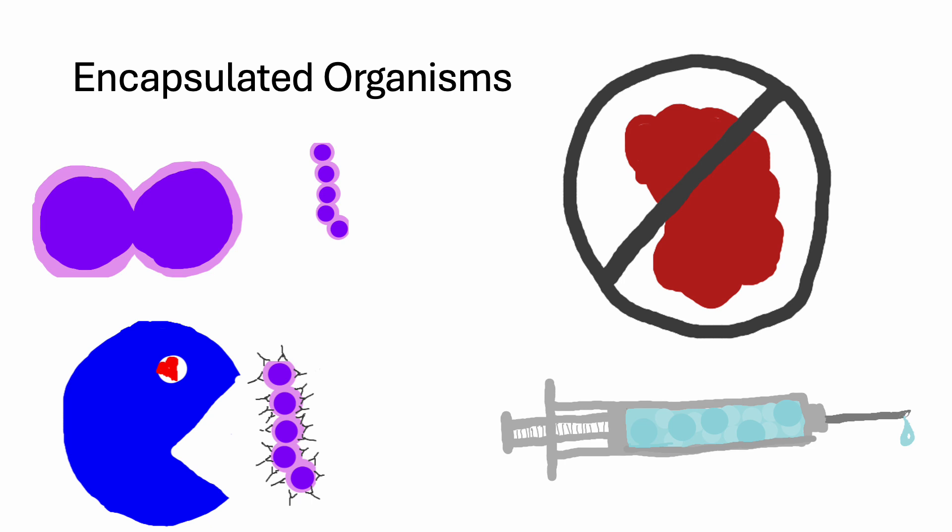B cells will opsonize these pathogens, basically by putting little flags all over the surface so other members of the immune system can recognize them as pathogens and wipe them out despite the fact that they have that sneaky polysaccharide capsule. The spleen houses specialized macrophages that recognize and phagocytose these opsonized bacteria, the ones that are coated in antibodies. So when these pathogens are in the blood, the specialized macrophages in the spleen will clear them. If a person has had their spleen removed or have a non-functioning spleen, they are at much higher risk for overwhelming infections from these encapsulated organisms.